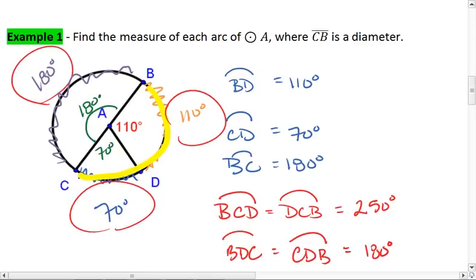So these arcs above could also have gotten different names. They could have been arc DB, arc DC, and arc CB.